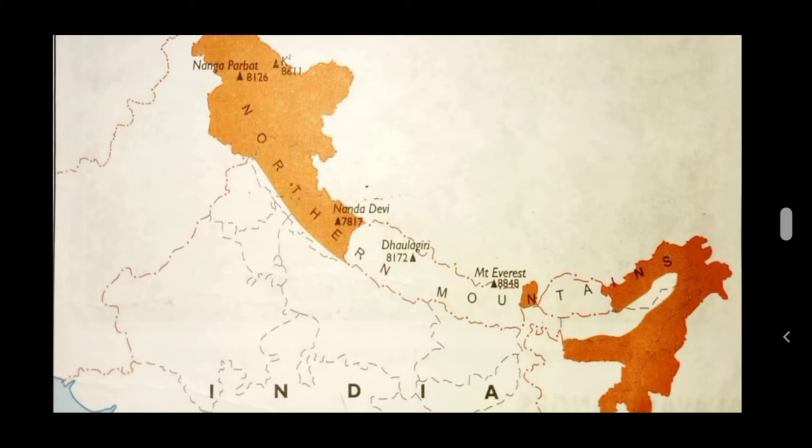The Naga, Garo, and Khasi hills are part of these ranges. These eastern mountains are also called Purvanchal mountains. Naga comes in Nagaland; Garo and Khasi come in Meghalaya.